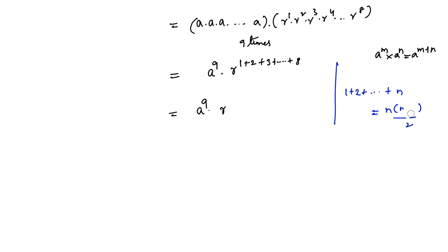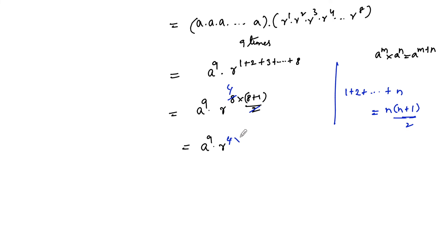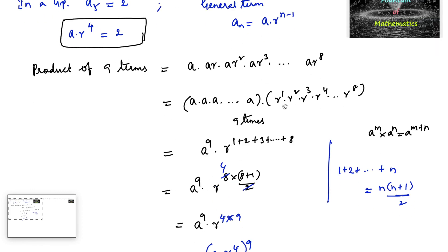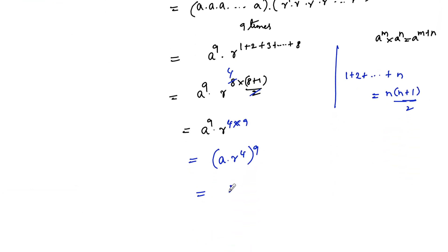So r to the power: here 8 natural numbers are there, so the sum of 8 natural numbers is 8 into 9 divided by 2. That gives a to the power 9 into r to the power 36. Simplifying, this can be written as a into r to the power 4, whole to the power 9. And we know that the fifth term is ar to the power 4, which is given as 2.